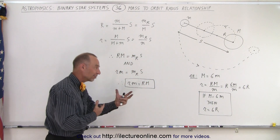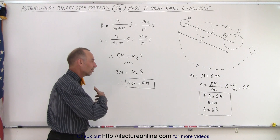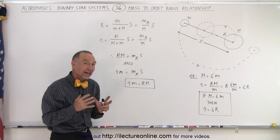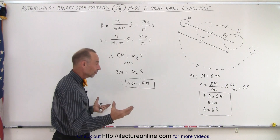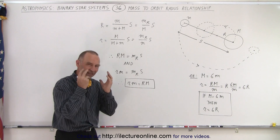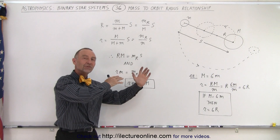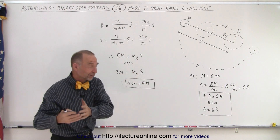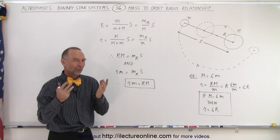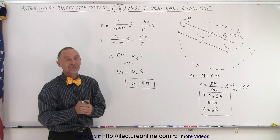Now we have that conceptual feel of the relative size of the mass to the relative size of the radius of their orbits around the barycenter. We can use that in future problems. If the mass is 5 times as much, the radius of the small object is 5 times as much, and so forth. That's a simple way of looking at the relative size of the radius to the relative size of the mass.